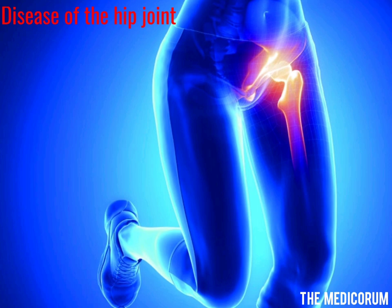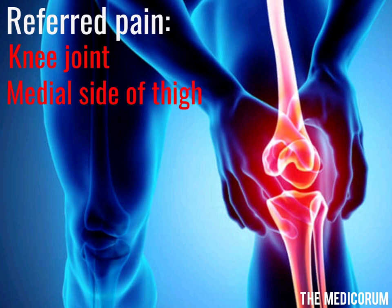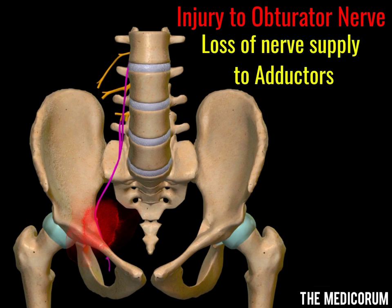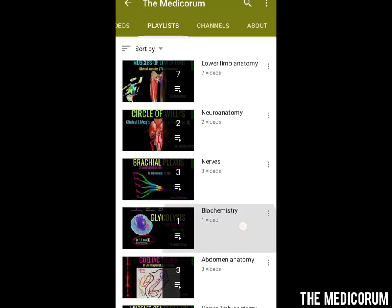Clinical correlation: if there is any disease at the hip joint, there are chances of referred pain in the knee joint, because the obturator nerve supplies both the hip joint and the knee joint. We may also have referred pain on the medial side of the thigh, as the nerve ends by giving a cutaneous branch to the thigh. If there is any injury to the obturator nerve, the adductors of the thigh will not receive nerve supply, resulting in impaired adduction of the thigh at the hip joint.